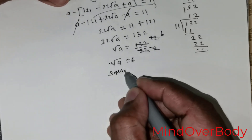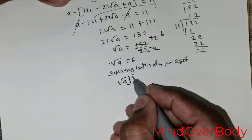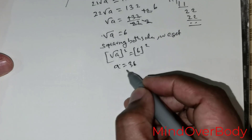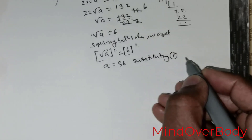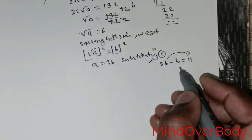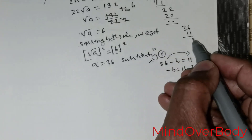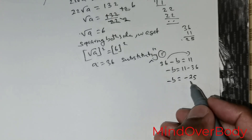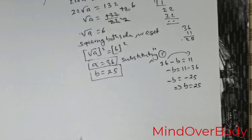Squaring both sides, we get root of A raised to the power 2 equals 6 squared, giving A equal to 36. Now substituting A equals 36 into equation 1: 36 negative B equals 11. Moving 36 to the other side: negative B equals 11 negative 36, which is negative 25. So the value of B is 25. That is the result — value of A is 36 and value of B is 25. This is the first method.